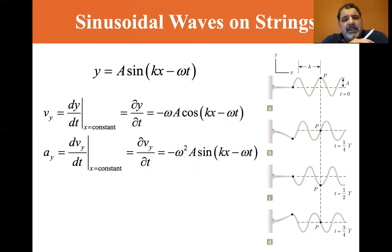Now the acceleration is the second derivative of Y or the first derivative of velocity with X held constant. So that's the partial of V of Y over the partial of T. That's equal to minus omega squared A sine KX minus omega T.